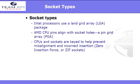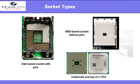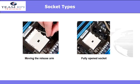So what are these socket types? You have LGAs, or land grid arrays; you have PGAs, or pin grid arrays; and you have zero insertion force, or ZIF sockets. Here you can see the difference between them. To remove the CPU, all you have to do is move the release arm and that will fully open the socket.